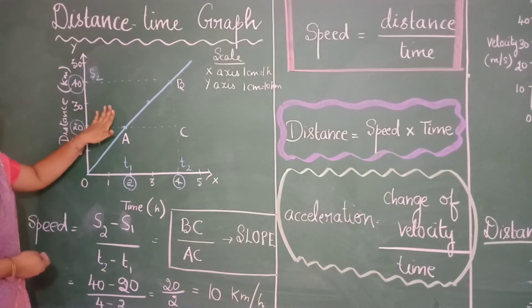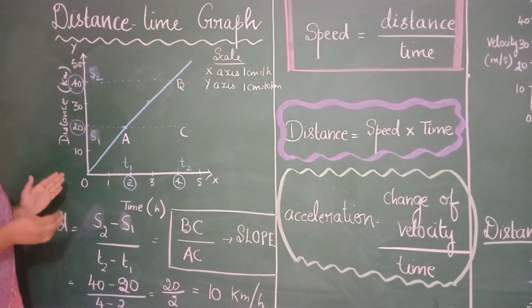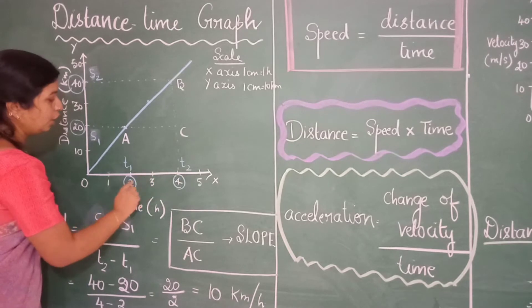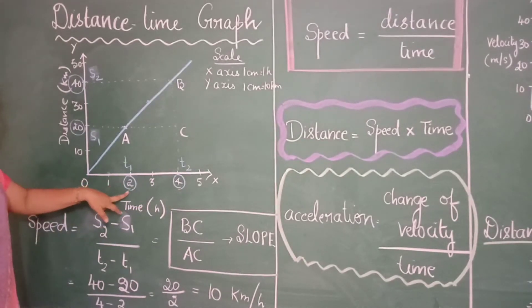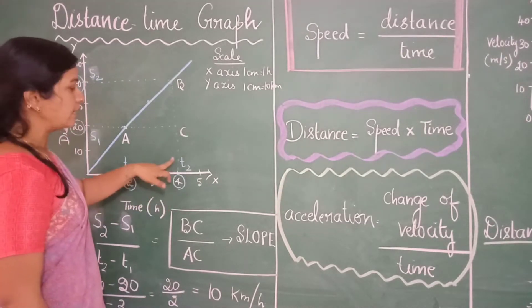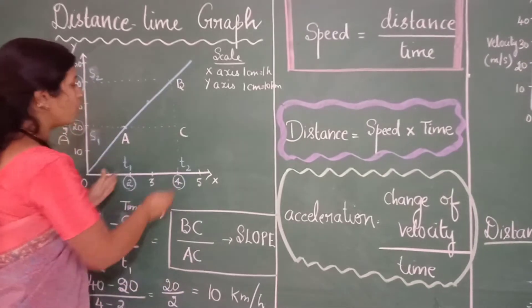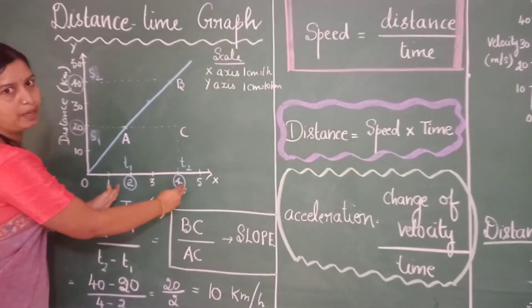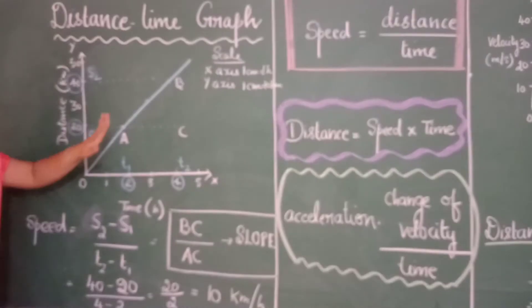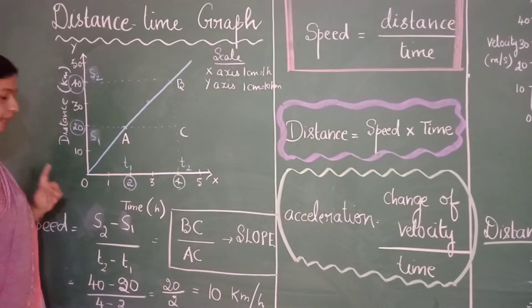So looking at this object in case we need to calculate the speed of the object between 2nd and 4th hour. I have represented 2nd hour as t1 and 4th hour as t2. So I am going to calculate the speed of the object between these two time intervals. So by the formula you know speed equal to distance by time.